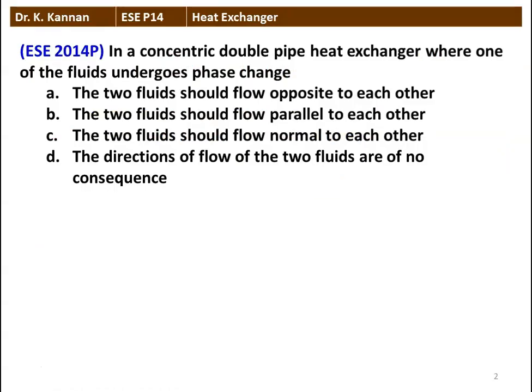The first question: in a concentric double pipe heat exchanger where one of the fluid undergoes phase change, the options are: the two fluids should flow opposite to each other; parallel to each other; normal to each other; or the direction of the flow of the two fluids are of no consequence. The correct option is: the direction of the flow of the two fluids are of no consequence when one of the fluid undergoes phase change.